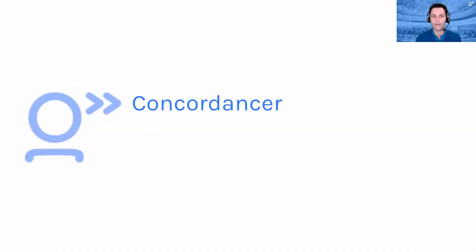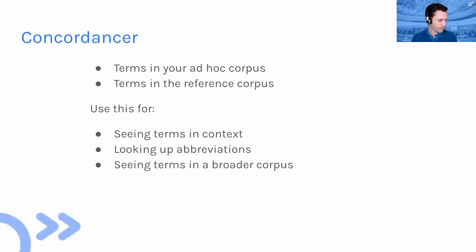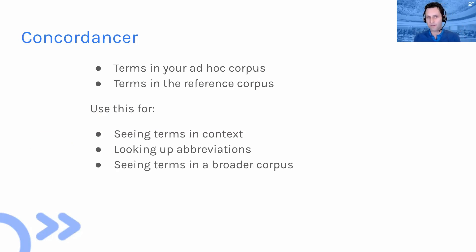What we're going to look at right now is a feature called the concordancer. Basically what that does is it looks at these words and terms in context — what comes before them and what comes after them — so we can see how they're actually used in real life.